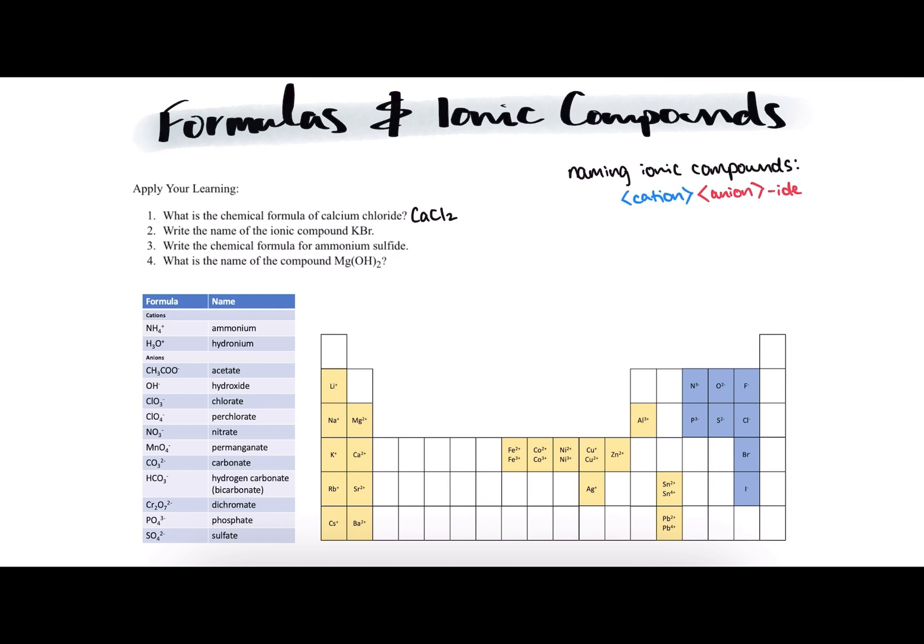Moving on to number 2, they're asking us to write the name of the ionic compound KBr. We have our rules up here. First we need to start with the cation's name. K is our cation in this case. K is the chemical symbol for potassium. It is here in group 1 on the periodic table, so we'll start by writing potassium.